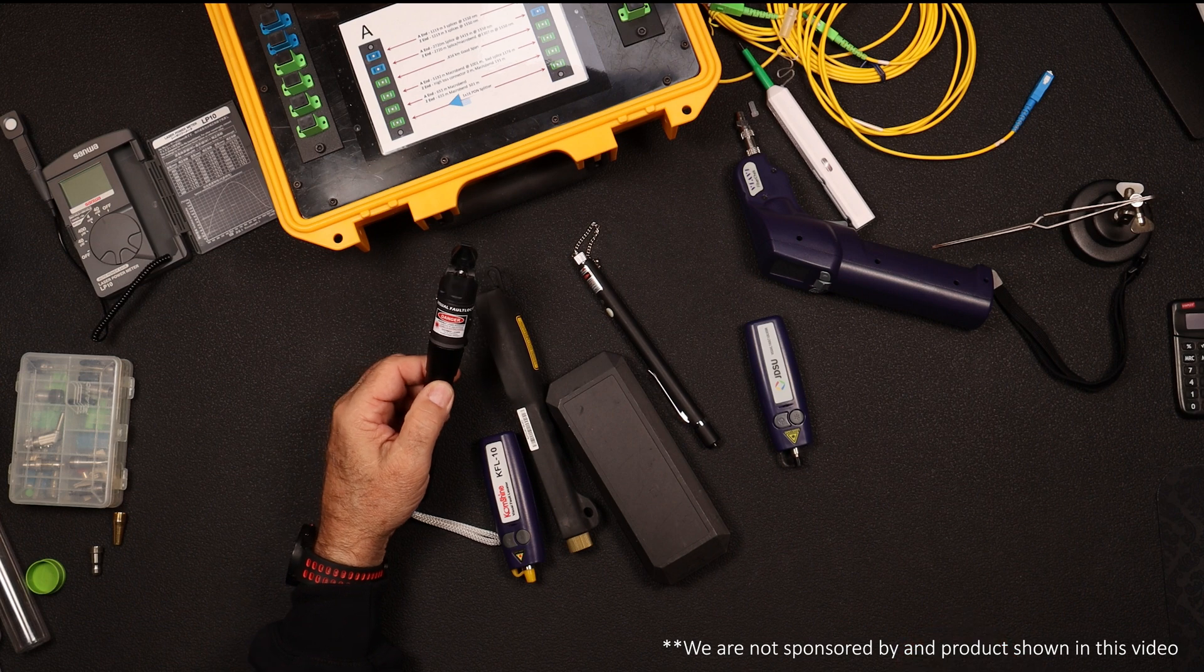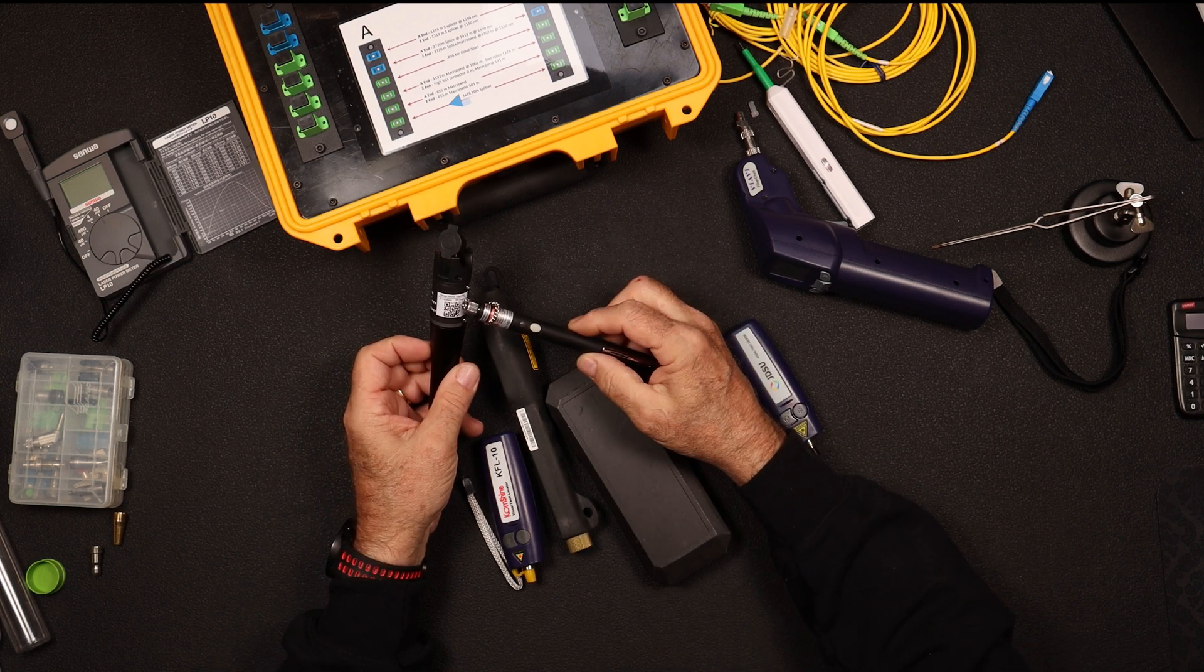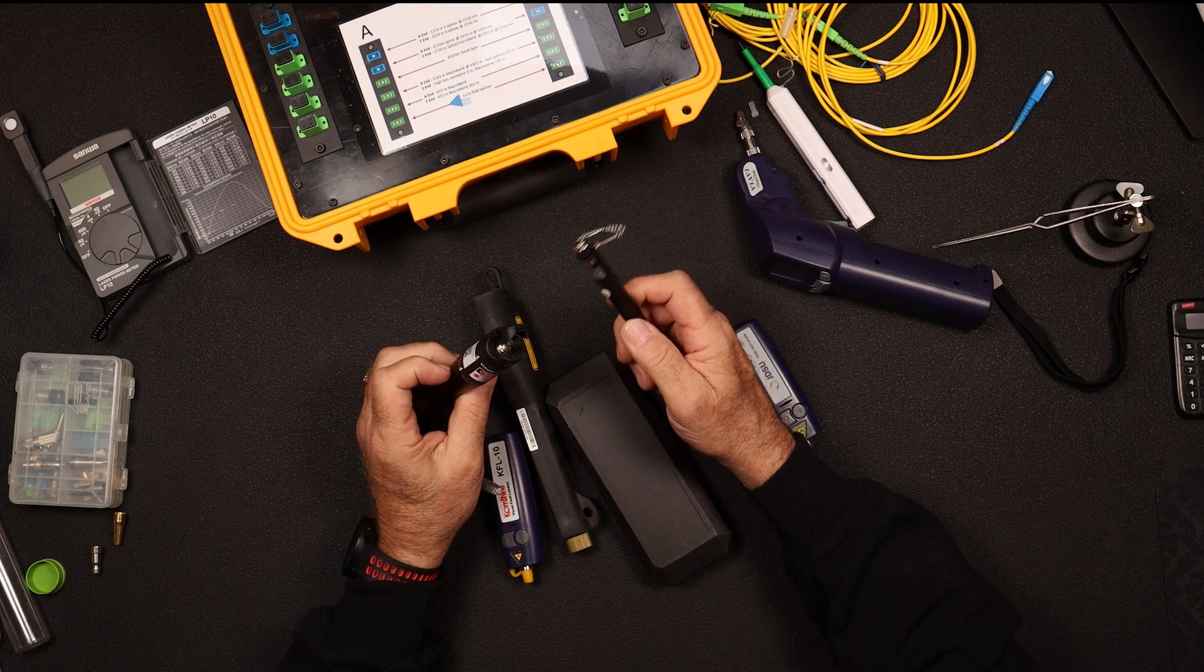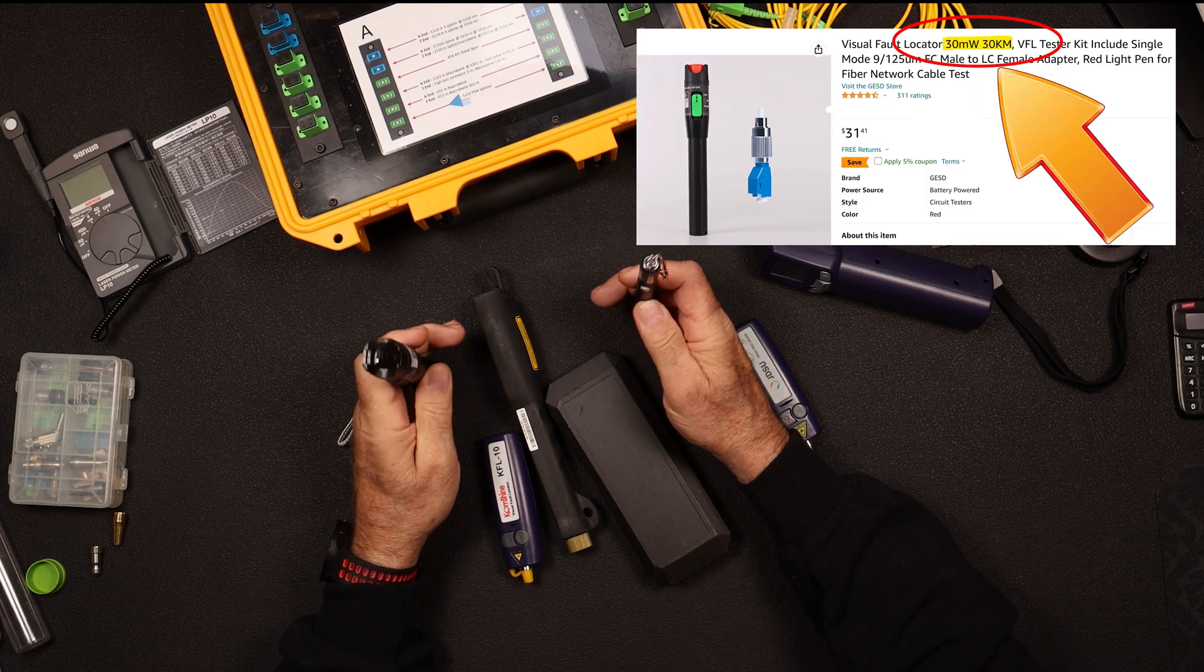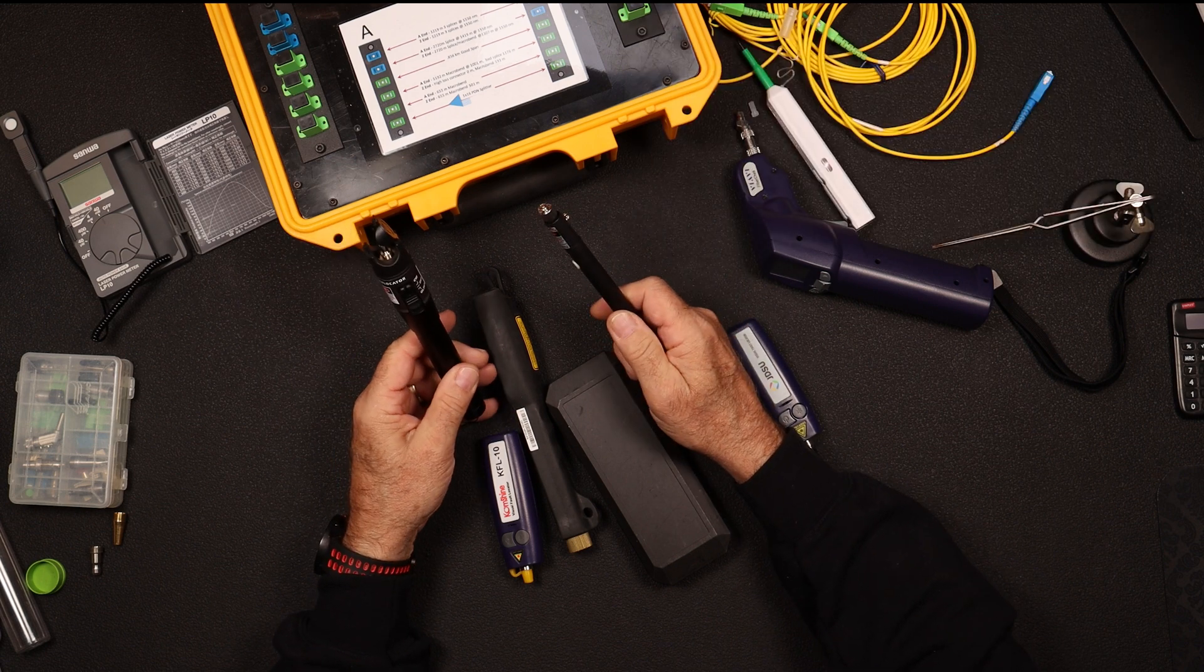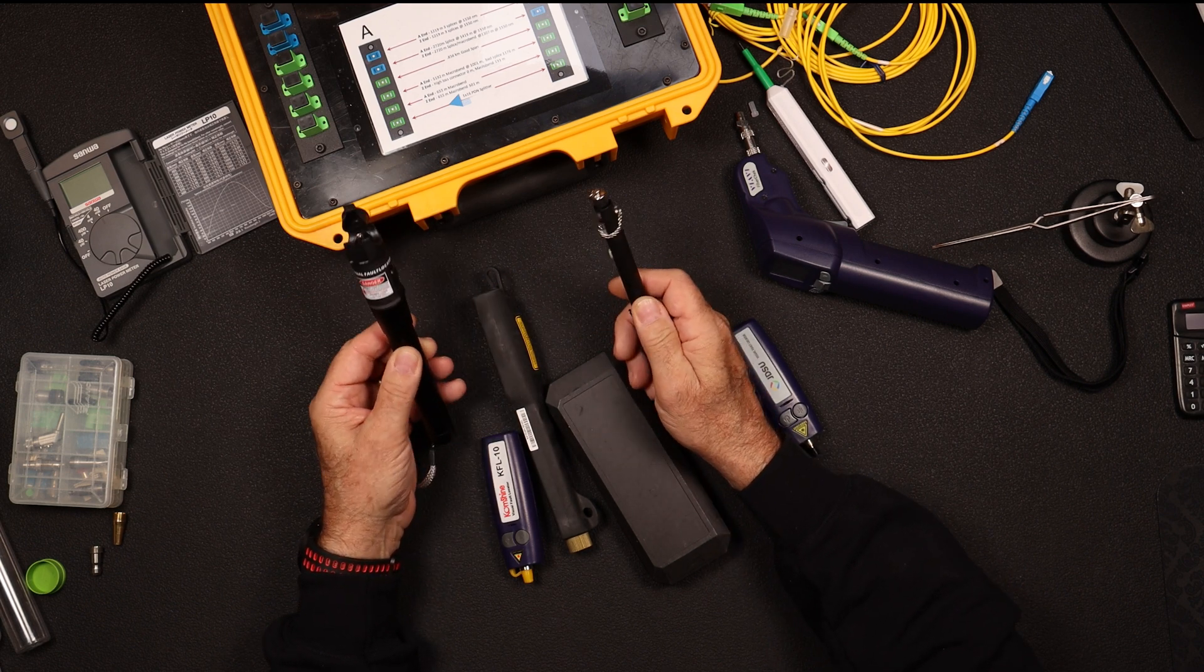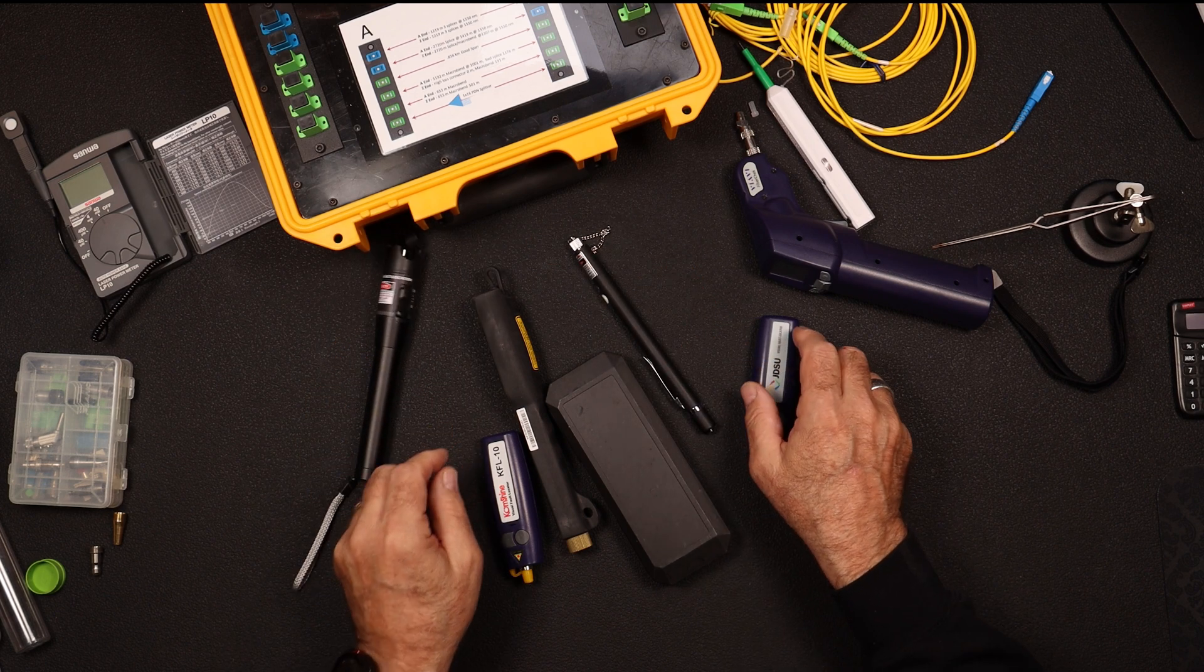Okay, so as we said, these guys here are Amazon specials. They're advertised as 30 milliwatts, and if you go on Amazon, 20 milliwatts on this one, 30 milliwatts on this one, they'll say a 30 kilometer VFL. I've actually seen manufacturers now advertising theirs as 10, 20, 30 kilometers. I question that. I wanted to understand if that was true, and I thought we'd put it to the test.